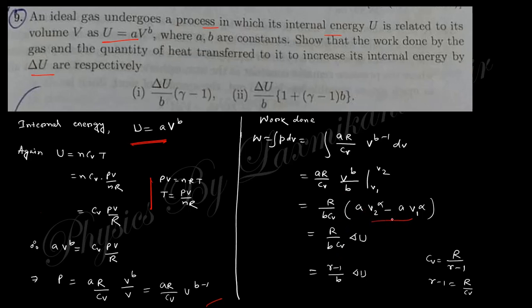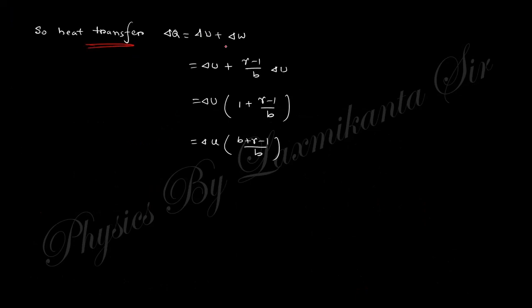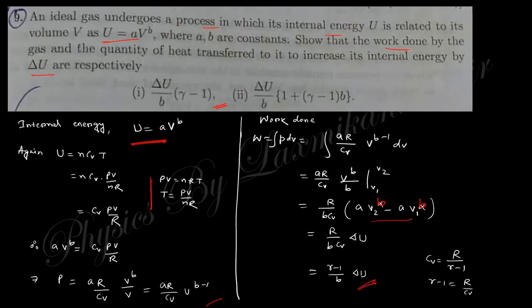Using U = A·V^b, the change dU is identified. Integrating the pressure expression gives the work done W, which equals dU times a factor involving b. The heat transfer dQ = dW + dU. Taking common factors, the final expressions for work done and heat transfer are obtained in terms of dU and the constant b.